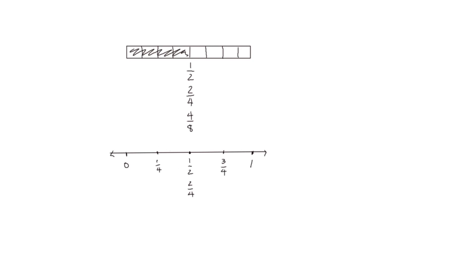Again, as we did with the tape diagram, we're going to divide one more time. We're going to divide each fourth again, so now we have a total of eight eighths. Each of our markers is an eighth: one eighth, two eighths, three eighths, four eighths, five eighths, six eighths, seven eighths. And we know eight eighths is equal to one.